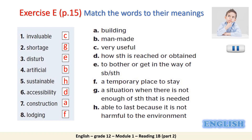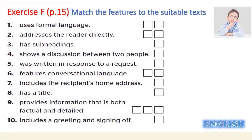Now we move from vocabulary enrichment to look at some of the text features. Do you have any idea about the characteristics of the texts from the previous lesson? With a reference to the four texts, you will find that they have different features as well as similar ones. In exercise F, page 15, we will match the features to the suitable texts. Keep in mind that some features will be found in one, two, or even three texts. Stop the video and do the task.